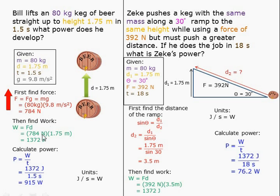Then I can find work, which is 784 newtons times 1.75 meters.